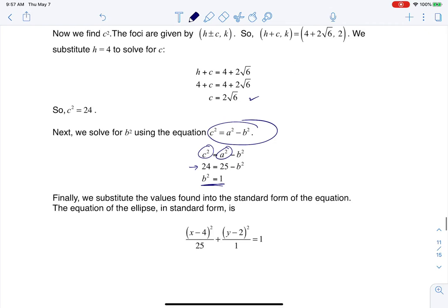And when I do that, then I have my formula. I have H, K, I have A² and B². And then there's my standard form of my ellipse. All right, thanks so much everyone.